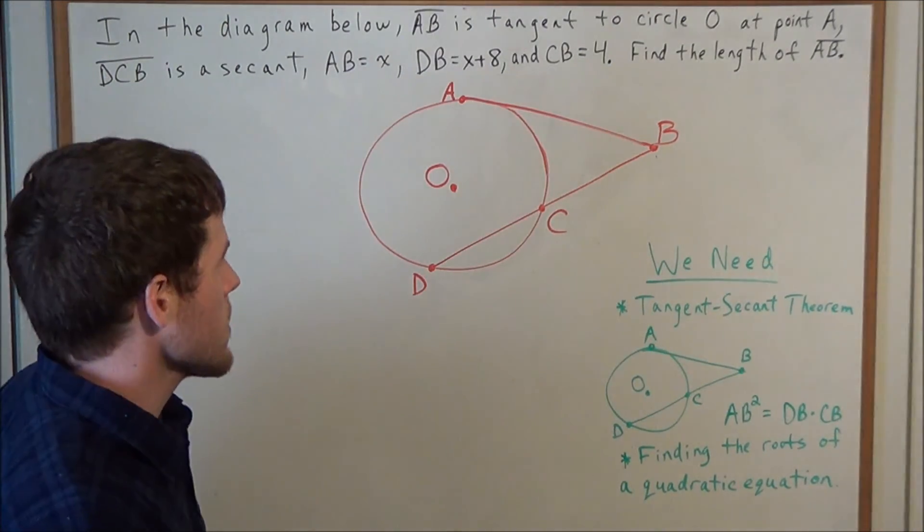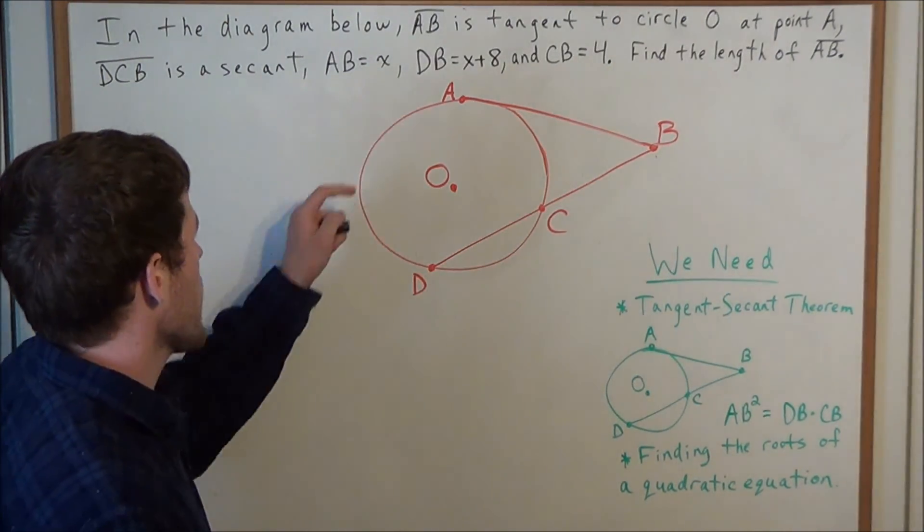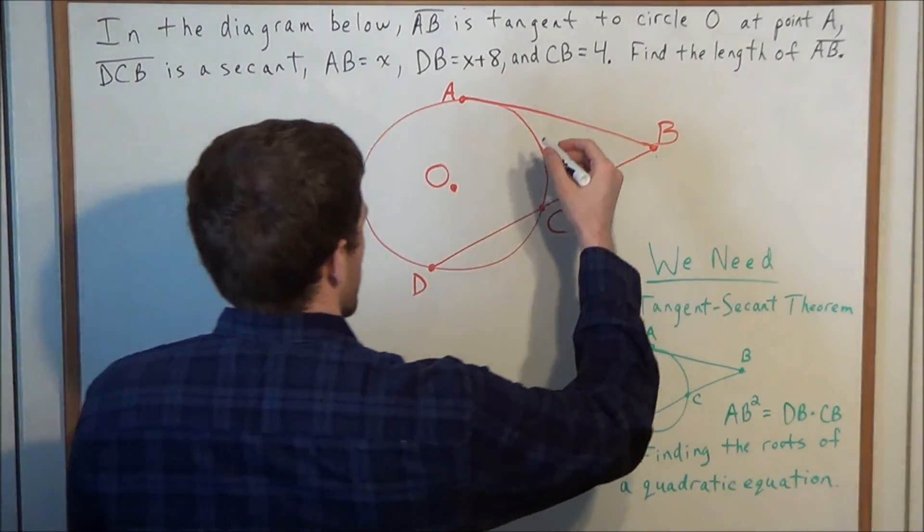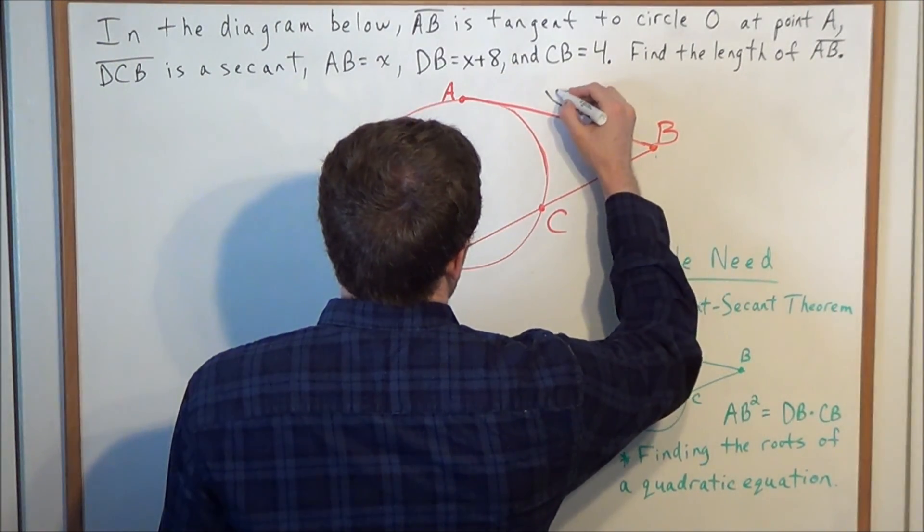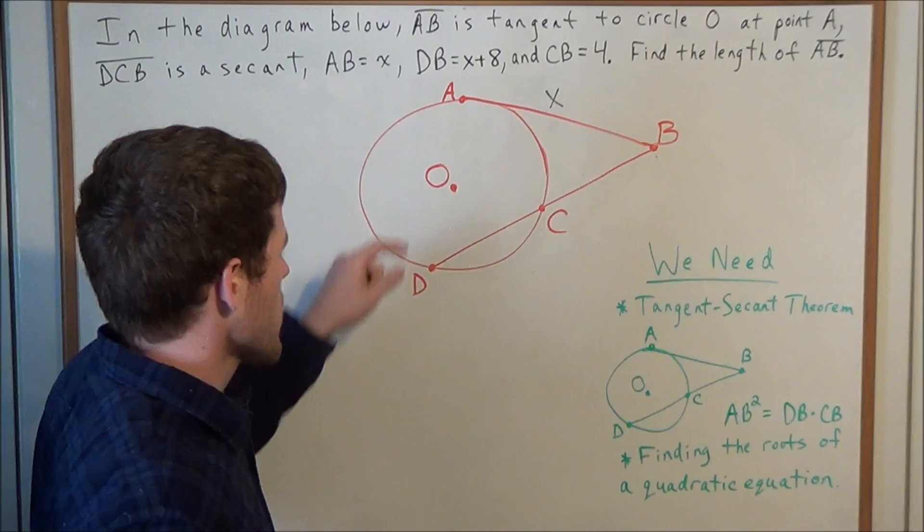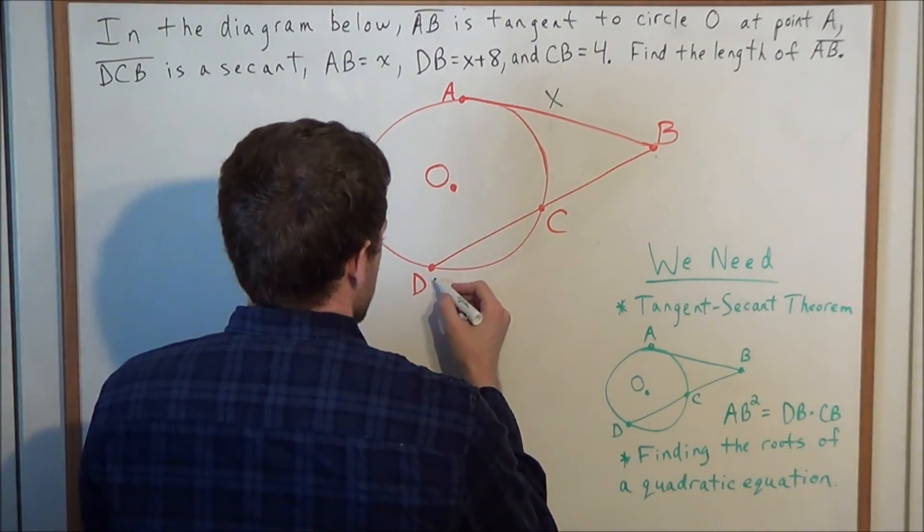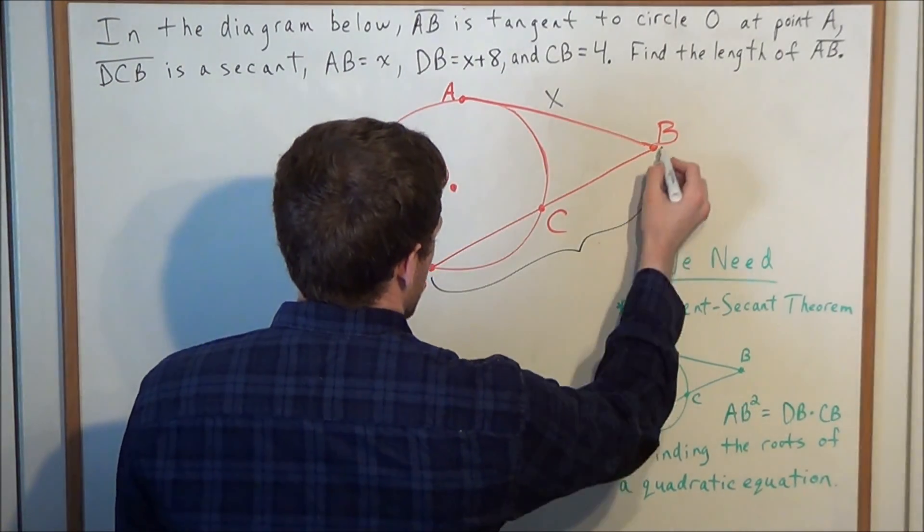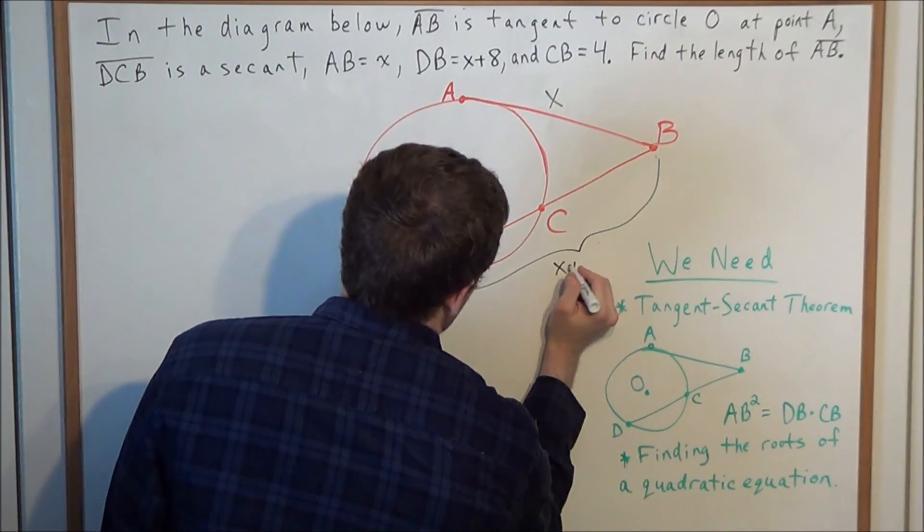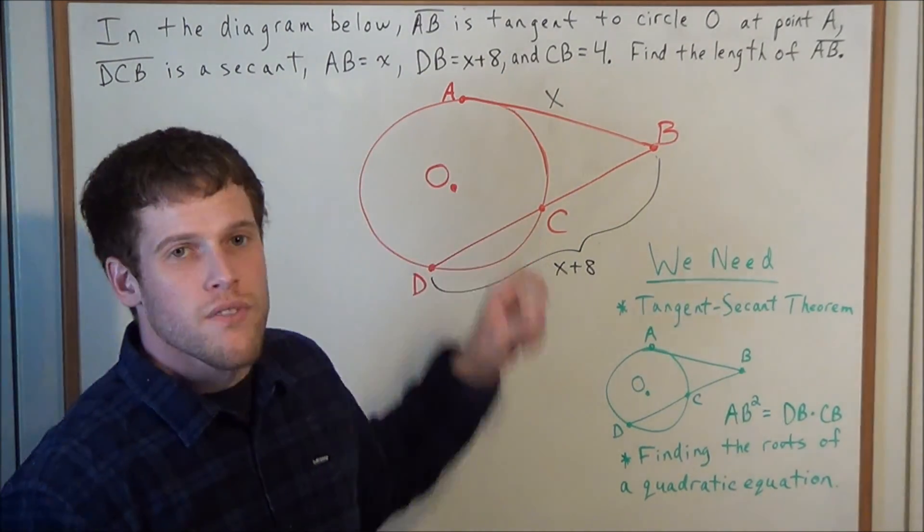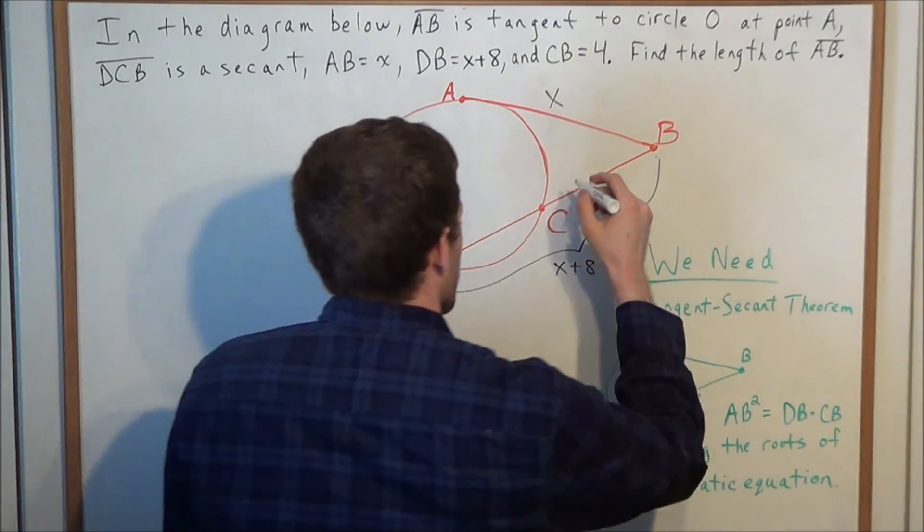So to get started, let's label all the line segments involved in this problem. We have the length of line segment AB is equal to X, so we can label this piece here X, the length of line segment DB is equal to X plus 8, so we're going to label this entire line segment here X plus 8, and finally we have the length of line segment CB is equal to 4.